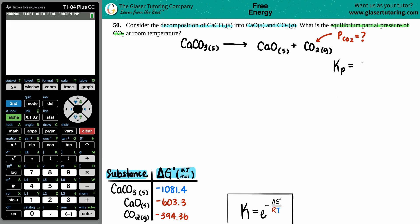So this would be equal to the pressure of CO2 divided by, let's see, because remember it's products divided by reactants, but calcium carbonate is also a solid, so I can't include that in the denominator as well.